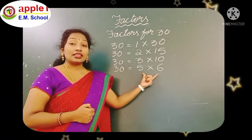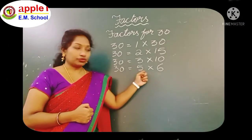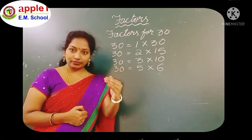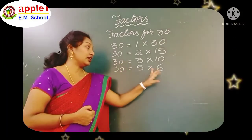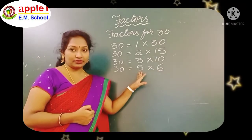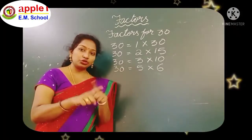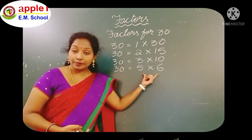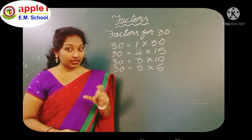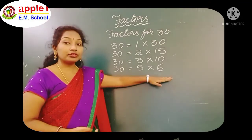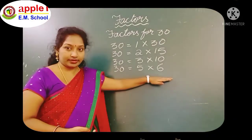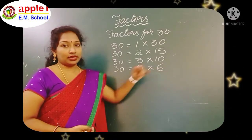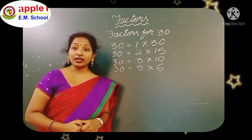Here the factors are repeating. See: 5 into 6 and 6 into 5 — both are the same. Whenever the factors are repeating, we have to stop this process. We have to stop here and write the factors.